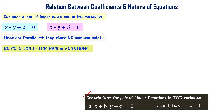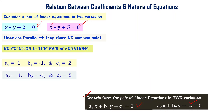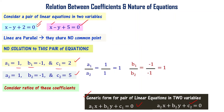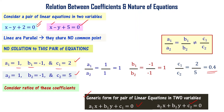Consider the generic form for a pair of linear equations. Comparing the first equation: a1 = 1, b1 = 1, c1 = 2. Similarly, comparing the second equation: a2 = 1, b2 = -1, c2 = 5. Now, a1/a2 = 1, b1/b2 = 1, and c1/c2 = 0.4 (that is, 2/5 = 0.4). So a1/a2 equals b1/b2, but that is not equal to c1/c2.